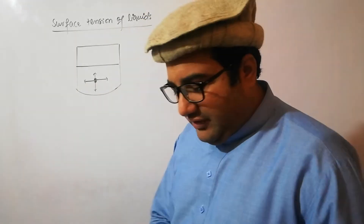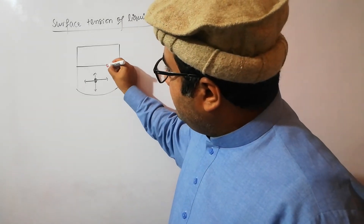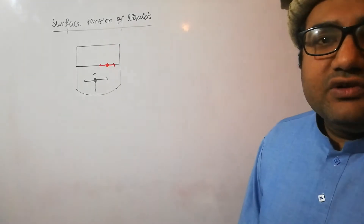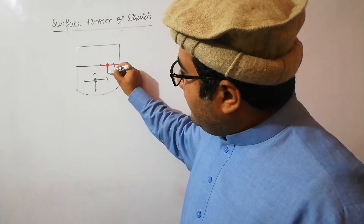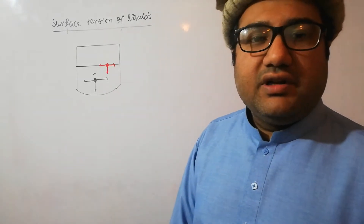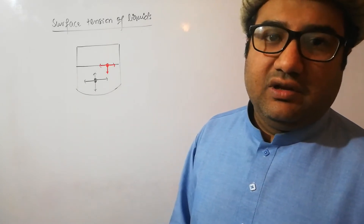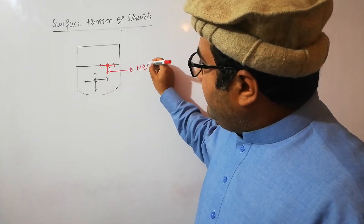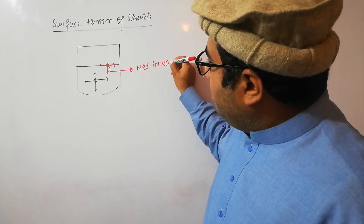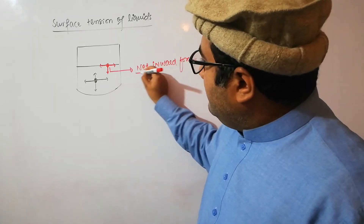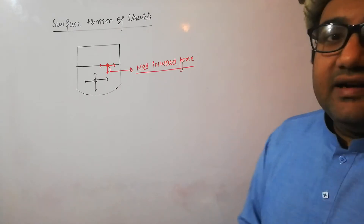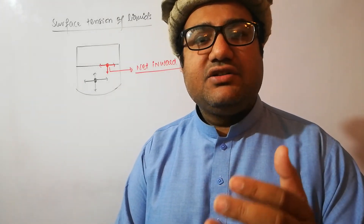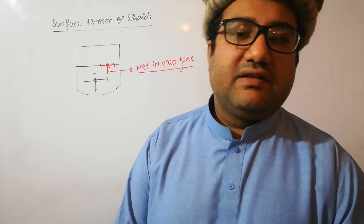But if a molecule is present on the surface of the liquid, this molecule is attracted towards the left and towards the right, so those two cohesive forces are counterbalanced. However, the inward attractive force — the inward cohesive force — is not counterbalanced by any upward force, because there is no molecule on top of this molecule. So this molecule experiences a net inward force, and this net inward force is the reason for the surface tension of this liquid. Surface tension is due to the unbalanced attractive forces that a molecule experiences on the surface of the liquid.